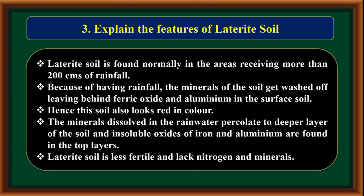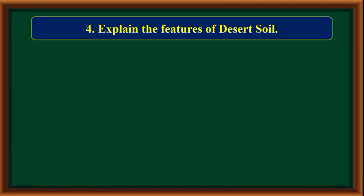Insoluble oxides of iron and aluminum are found in the top layers of laterite soil. Laterite soil is less fertile and lacks nitrogen and minerals.